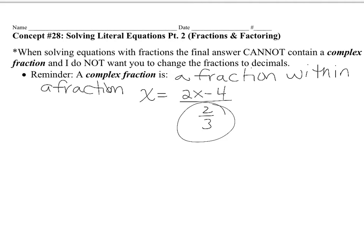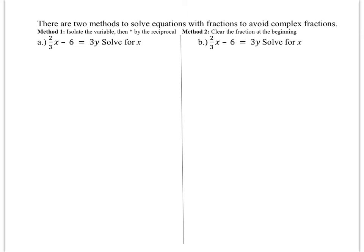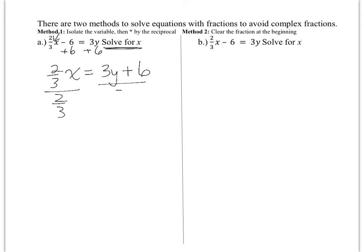Let's take a couple of examples. We're going to solve for x, and there are two different methods. One method is we can isolate the variable and then multiply by the reciprocal. To get x alone, the first thing we would have to do is add 6 to both sides, giving us 2 thirds x equals 3y plus 6. Now, 2 thirds is being multiplied by x. What I don't want you to do is divide everything by 2 thirds, because that's going to give you a complex fraction.